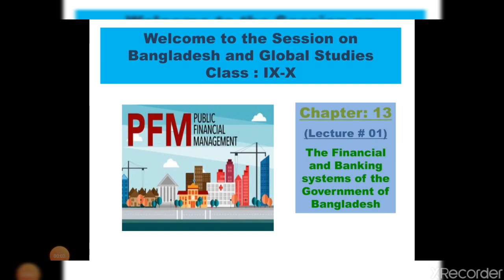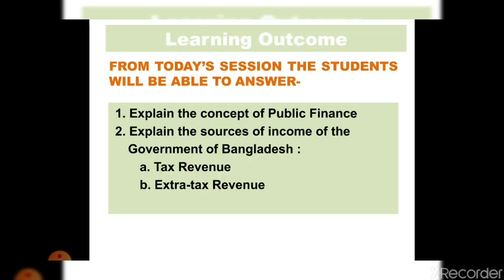In chapter 13, the topic of discussion is the financial and banking systems of the government of Bangladesh. After the discussion, you will be able to know the concept of public finance, the sources of income of the government of Bangladesh, the sources of tax revenue, and the sources of extra tax revenue.